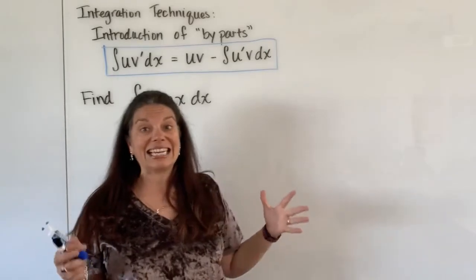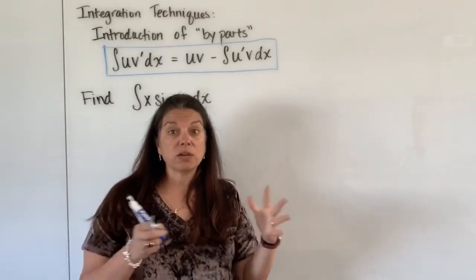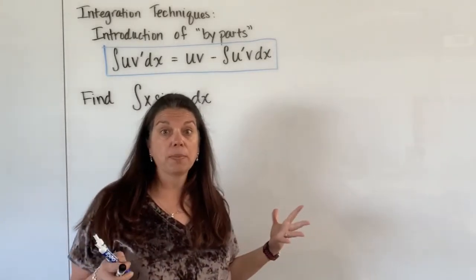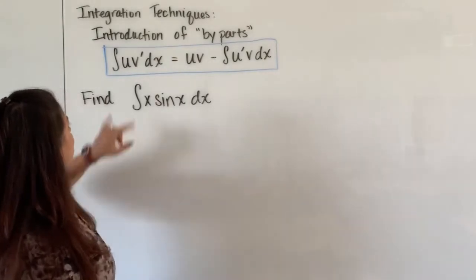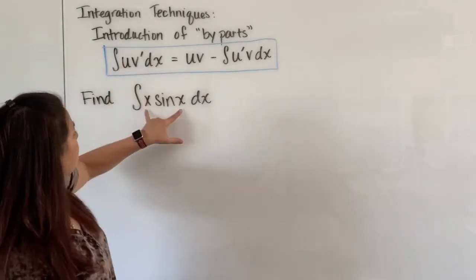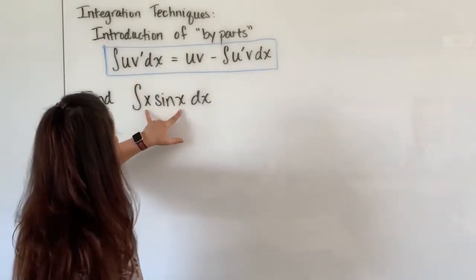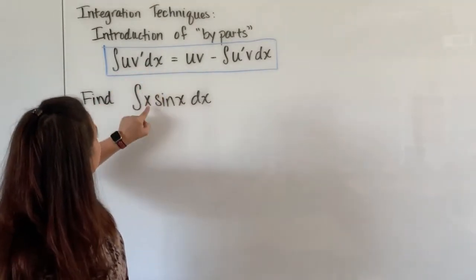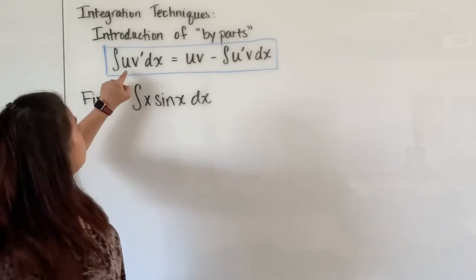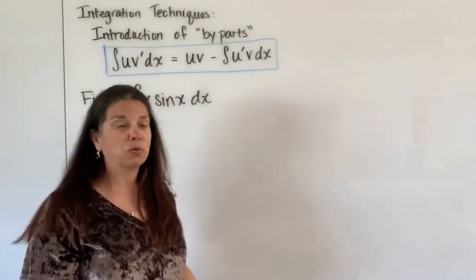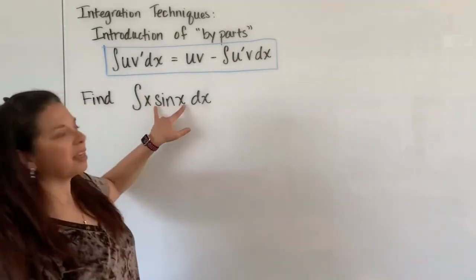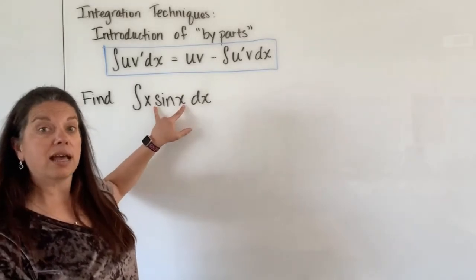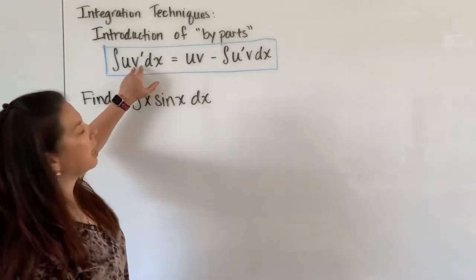Okay so that must mean I need to figure out what the u is and what the v is in our problem. If I compare our integrand x times sine x here with the formula, technically speaking the first component here should be matched up with the u in my problem.